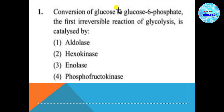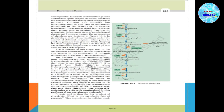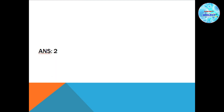The first irreversible reaction of glycolysis is the conversion of glucose to glucose-6-phosphate. This reaction is catalyzed by an enzyme. The answer is hexokinase — that is answer number 2.